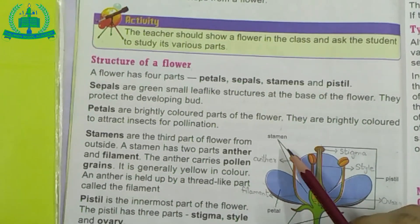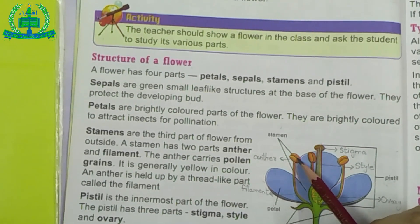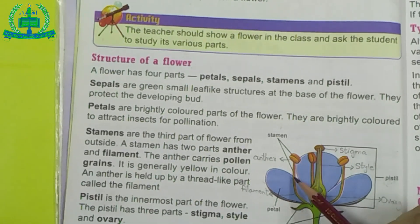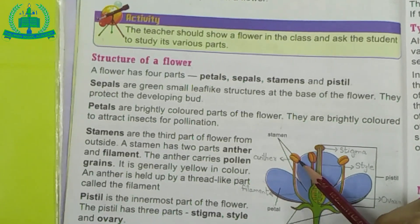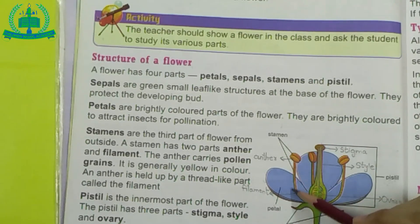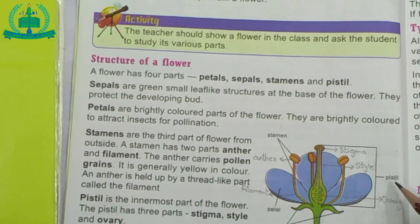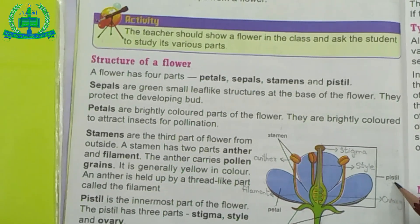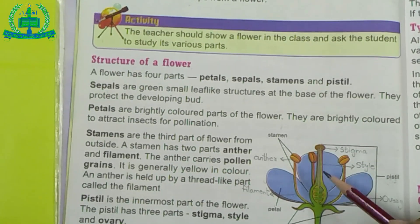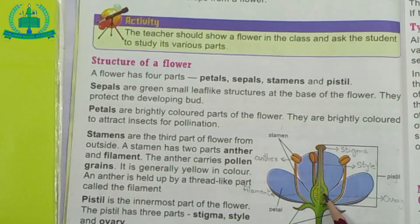The third part is Stamen. What is stamen? This is the male reproductive part of a flower. Every stamen has two parts: anther and filament. The anther carries pollen grains, which is attached to the filament. The last part is Pistil — the female reproductive part of the flower. Pistil consists of three parts: number one, stigma; number two, style; number three, ovary.